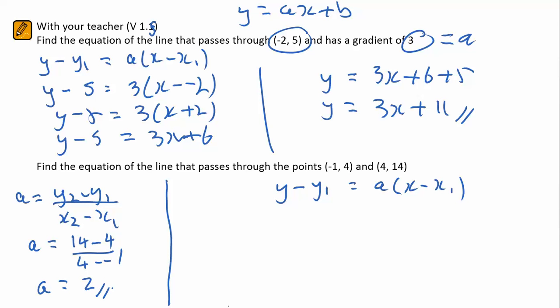I then substitute that into the formula equation. I'm going to use negative 1, 4 as my point. I could have chosen 4, 14. It just looks a little easier to work with.